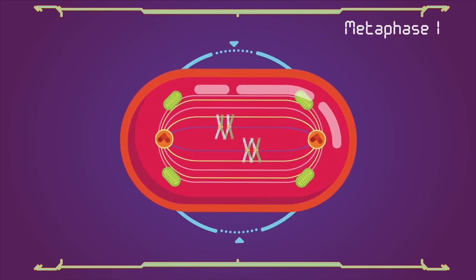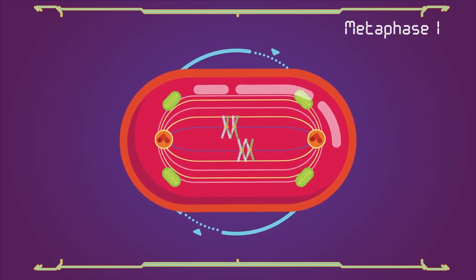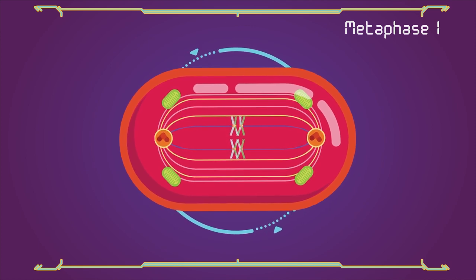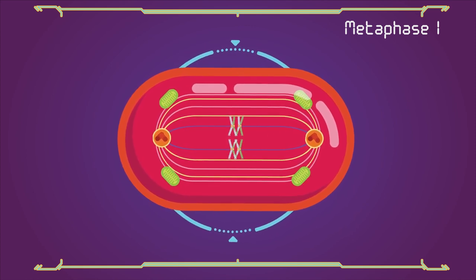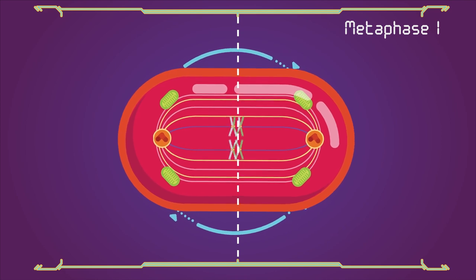Metaphase 1: Homologous pairs move together along the metaphase plate. The paired homologous chromosomes align along an equatorial plane that bisects the spindle.